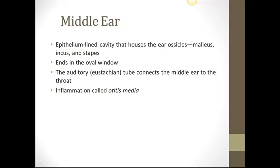The middle ear is an epithelium-lined cavity that houses the ear ossicles. These ossicles consist of the malleus, incus, and stapes — you will want to know these three for your exam. It ends in the oval window, and the auditory or eustachian tube connects the middle ear to the throat. Sometimes, if there's an infection of some sort, fluid can travel to the middle ear via this tube.